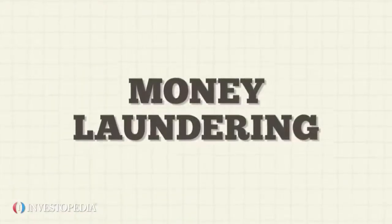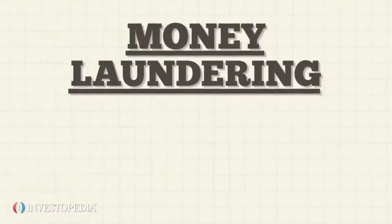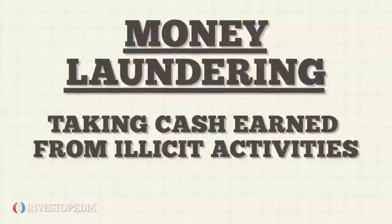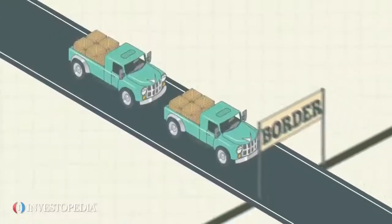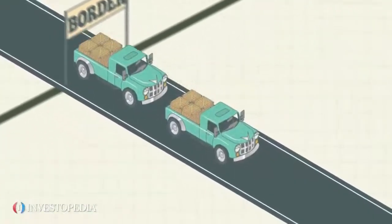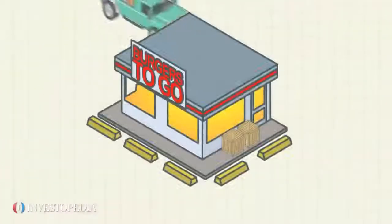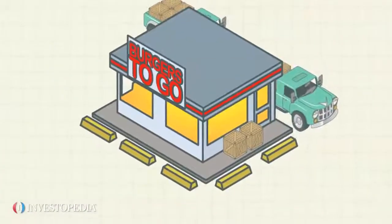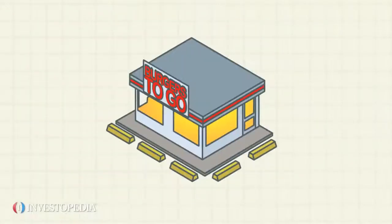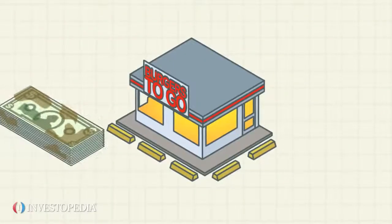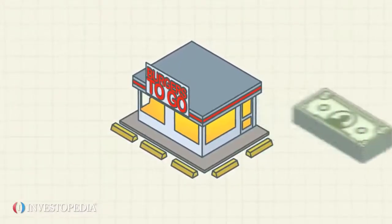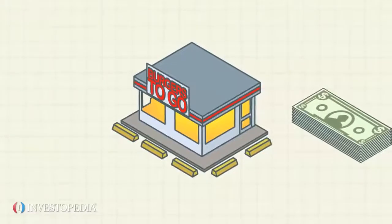Money laundering is the process of taking cash earned from illicit activities such as drug trafficking and making the cash appear to be earnings from legal business activity. The money from the illicit activity is considered dirty, and the process launders the money to make it look clean.